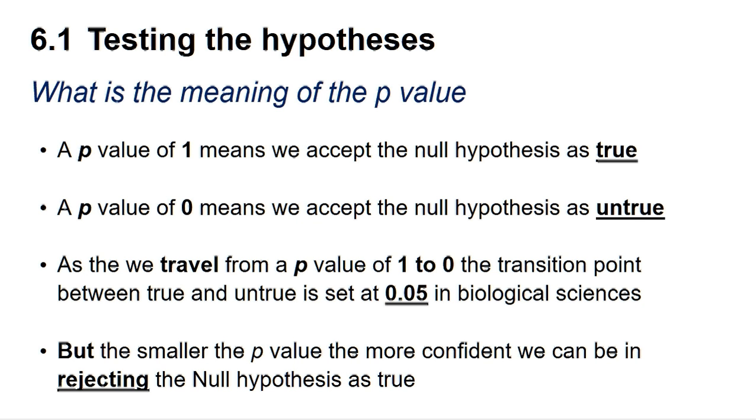So what is the meaning of the p-value? A p-value of one means we can accept the null hypothesis as true whereas a p-value of zero means we can accept the null hypothesis as untrue. As we travel from a p-value of one to zero the transition point between true and untrue is set at 0.05 in the biological sciences.